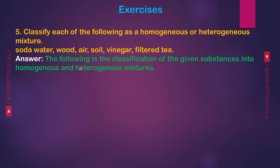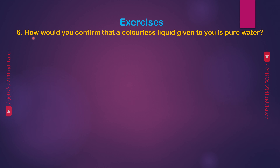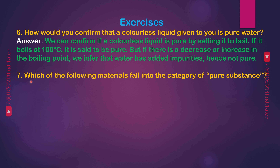Question 5: Classify each of the following as homogeneous or heterogeneous mixtures — soda water, coal, air, soil, vinegar, filter tea. Answer — Homogeneous mixtures: soda water, vinegar, filter tea, air. Heterogeneous mixtures: coal, soil. Question 6: How would you confirm that a colorless liquid given to you is pure water? Answer: We can confirm if a colorless liquid is pure by setting it to boil. If it boils at 100°C, it is said to be pure.